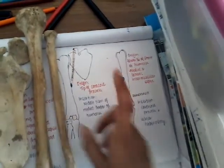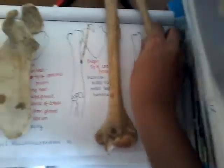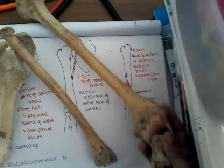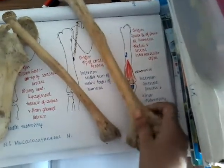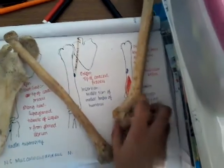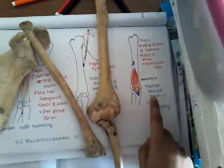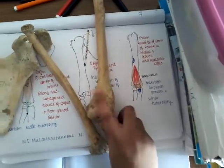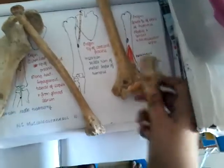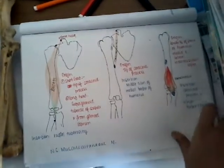The next muscle is brachialis. Brachialis is a muscle between the humerus and the ulna. It originates from the lower half of the anterior surface of the humerus, and it gets inserted into the coronoid process and the ulnar tuberosity. So it originates here in the lower half of the humerus and inserts here at the coronoid process and ulnar tuberosity.